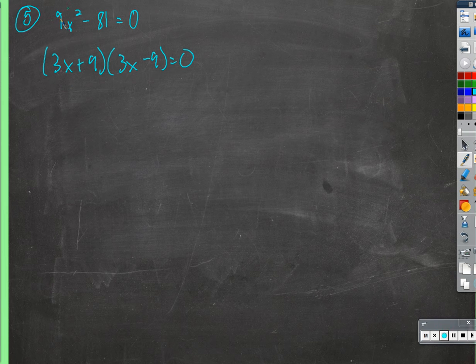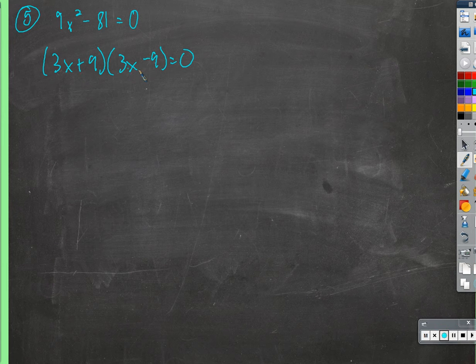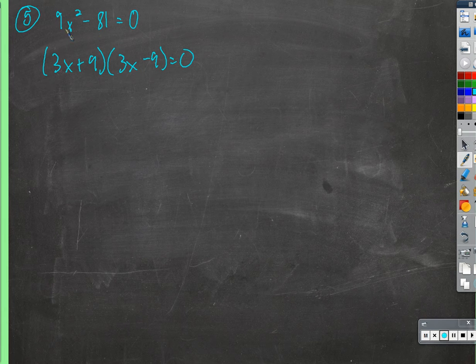The square root of 9 is 3, and the square root of 81 is 9. We can factor it as the product of two conjugates, where the middle sign is different. That would multiply out to 9x squared minus 81.